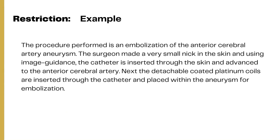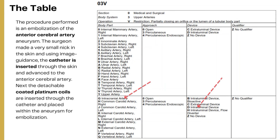Here is a coding example for the root operation Restriction. The procedure is embolization of an anterior cerebral artery aneurysm. The surgeon made a small nick in the skin and, using image guidance, inserted a catheter through the skin and advanced it to the anterior cerebral artery. Detachable coated platinum coils are inserted through the catheter and placed within the aneurysm for embolization. The first character is 0 for medical and surgical; the second character is 3 for upper arteries; the third character is V for Restriction.